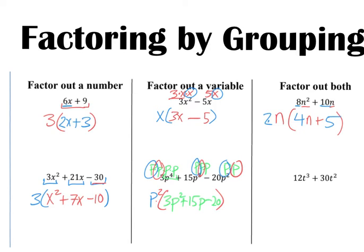For the last one, I'm going to look at my letters first: t to the 3rd and t squared. So I can take t squared out front, because that's t times t. I'm left with a t for the first part and nothing for the second part. Then the number parts: I've got 12 and 30. I can go bigger — both 12 and 30 can be divided by 6. So I put that out front: 6 times 2 gets to 12, 6 times 5 gets to 30. At this point, these are fully factored.